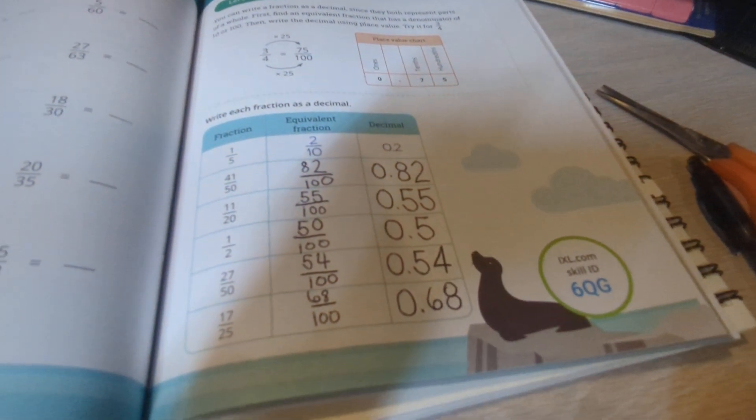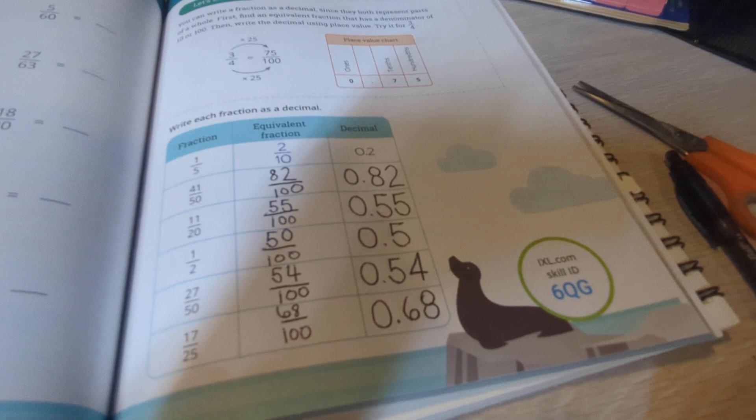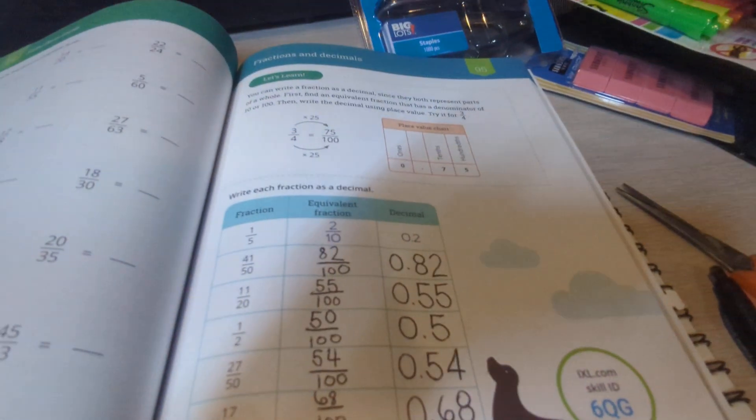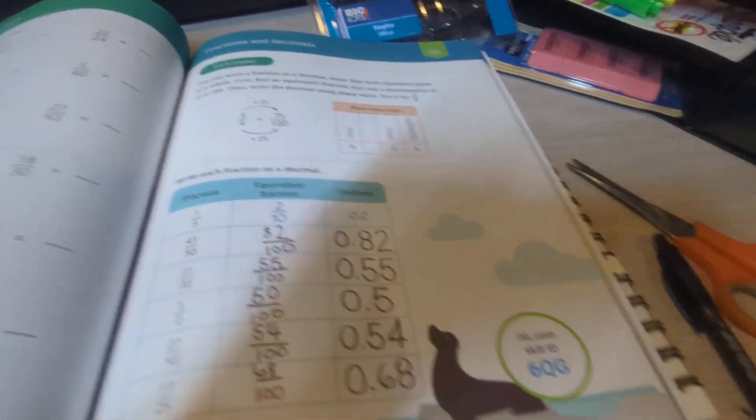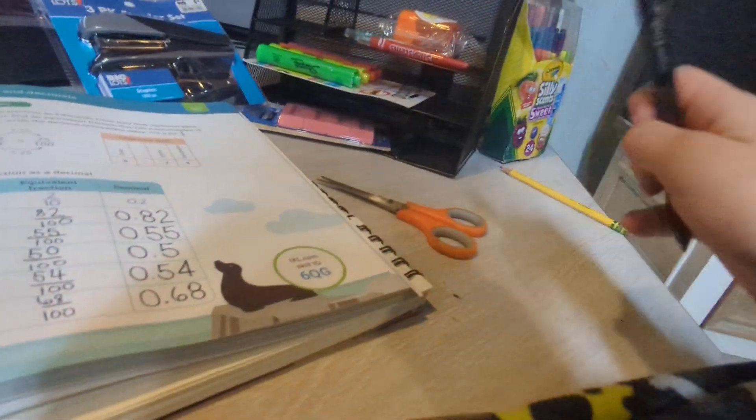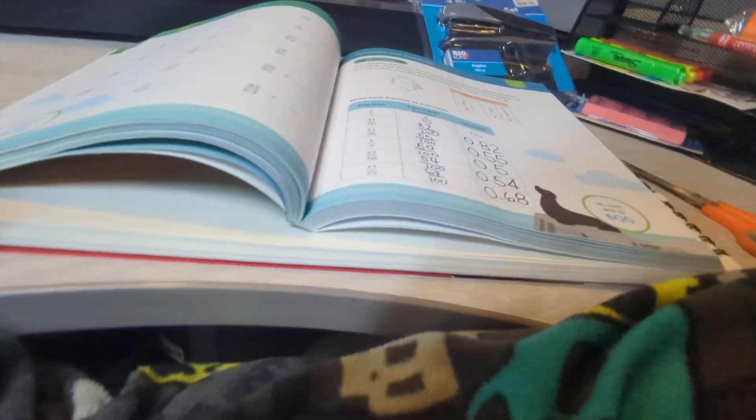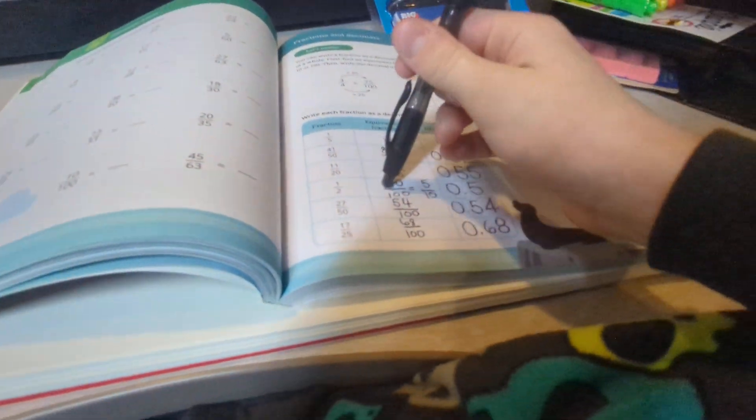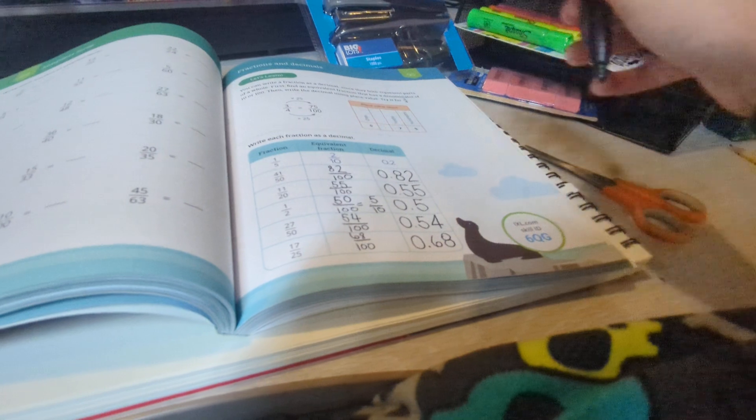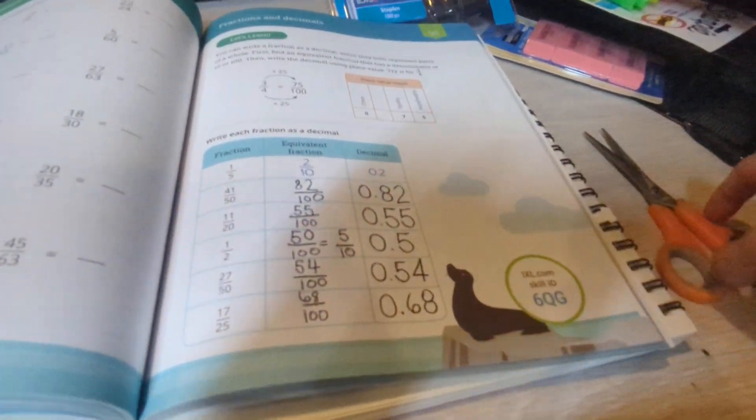Alright guys. Thank you for watching this video about fractions and decimals. And here's 1/2. And here's 1/2. You can also equal it to 5 tenths here. Whichever way you want it. 50 hundredths or 5 tenths.